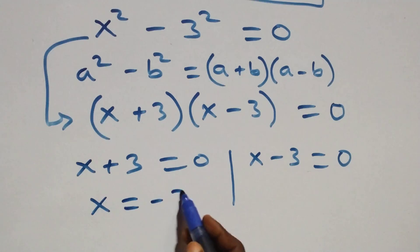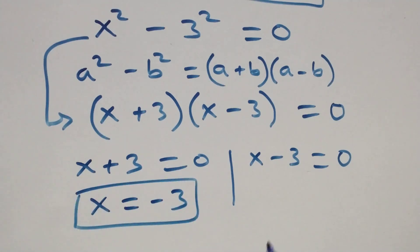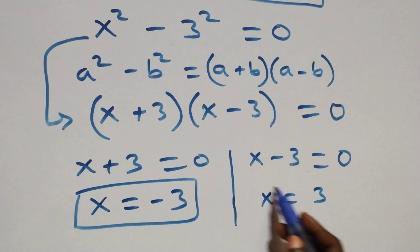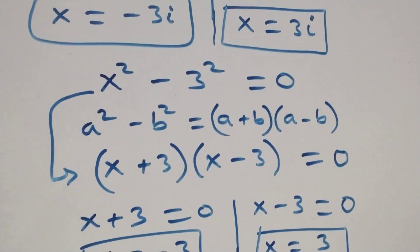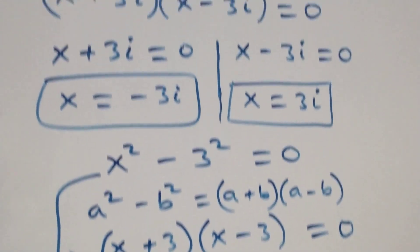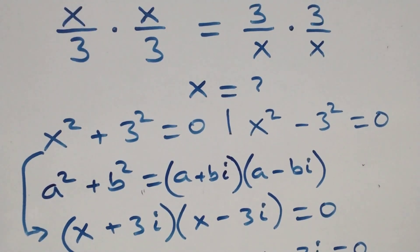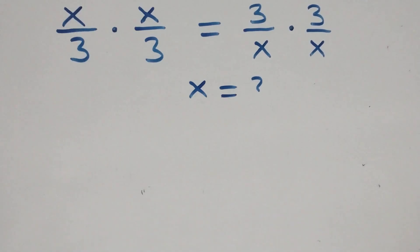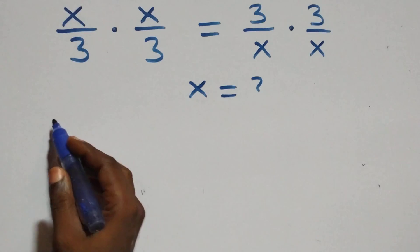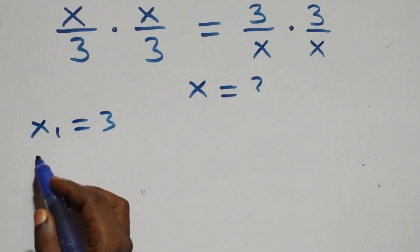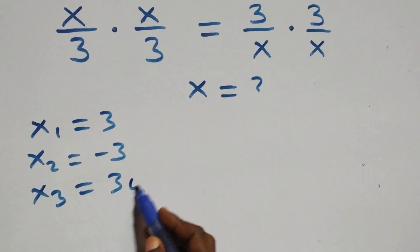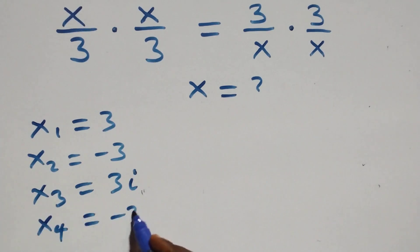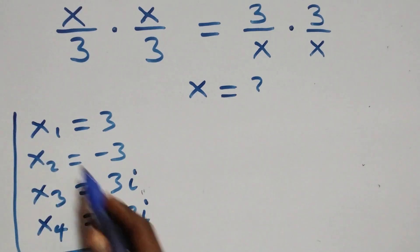On this side we have x = −3, which is a real solution. So we have two real solutions from here. Making four solutions altogether — two real and two complex solutions. Writing them out: x1 = 3, x2 = −3, x3 = 3i, and x4 = −3i — these are the two real and two complex solutions.